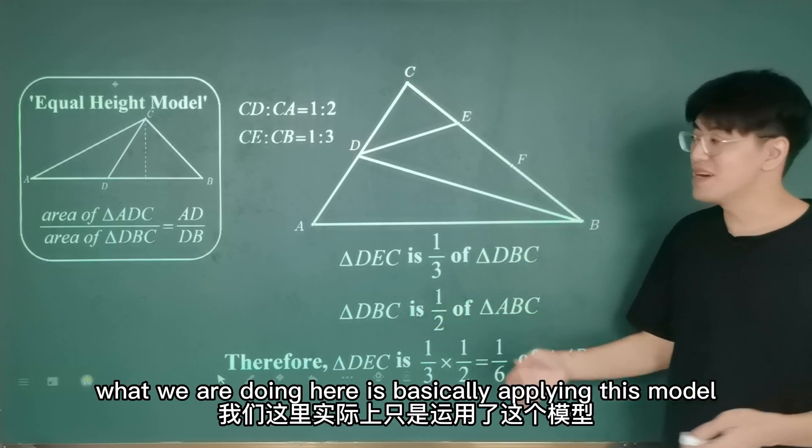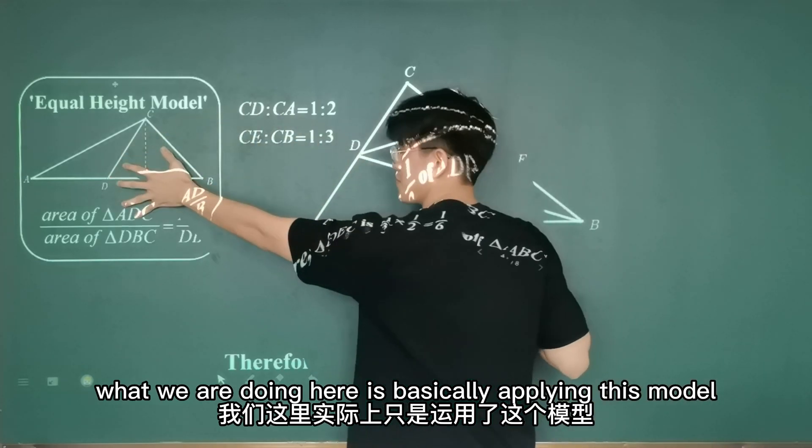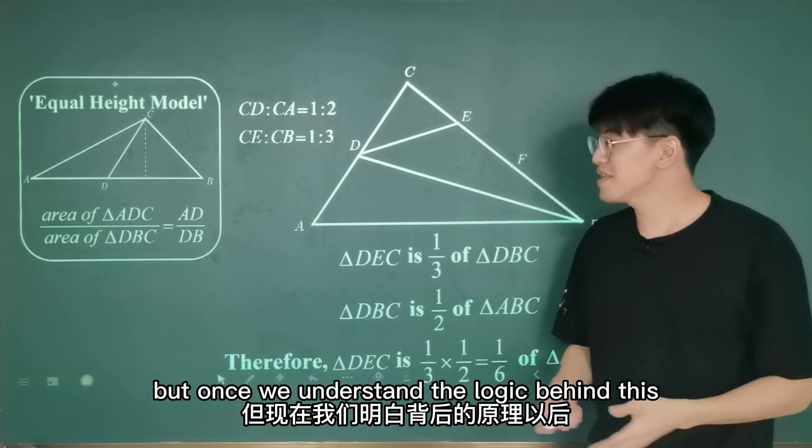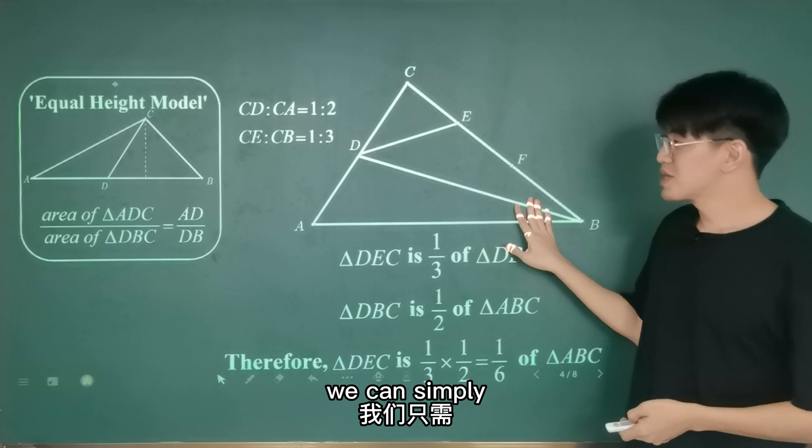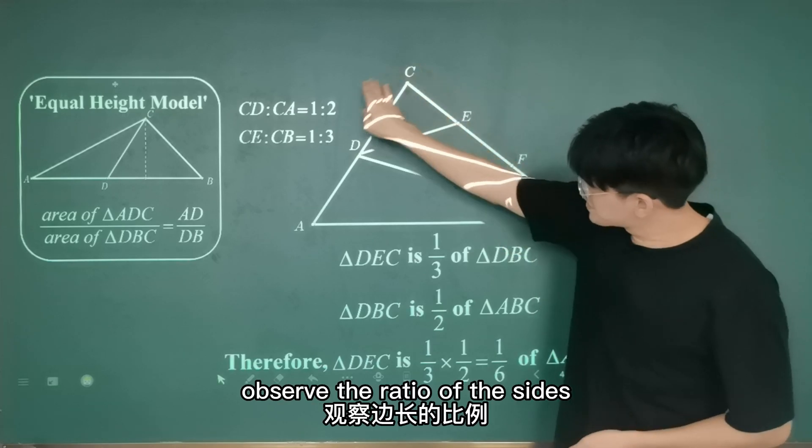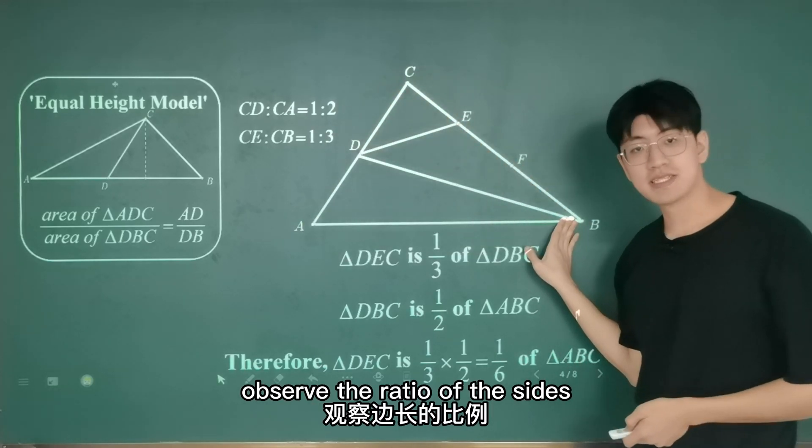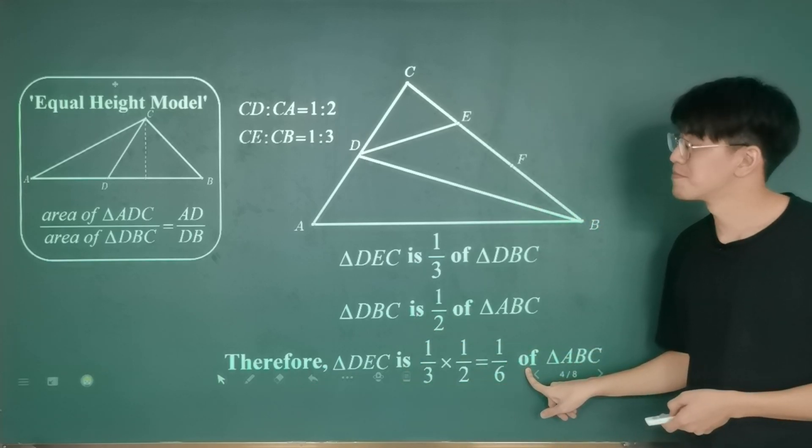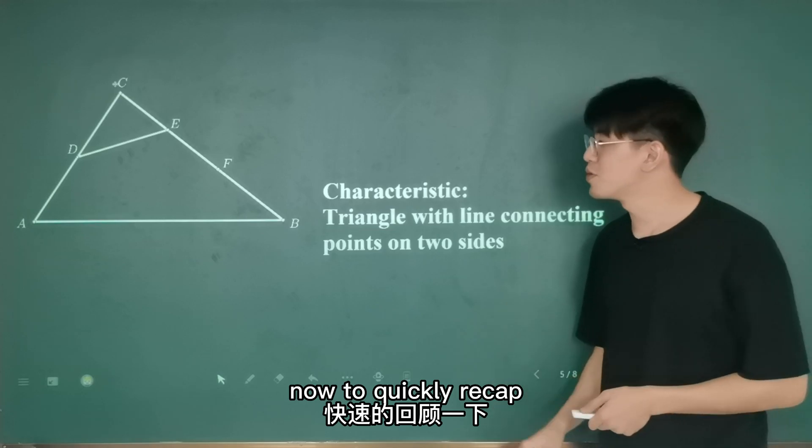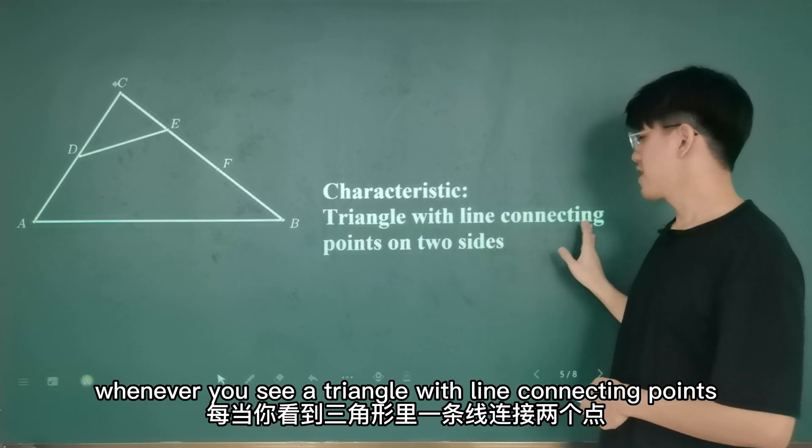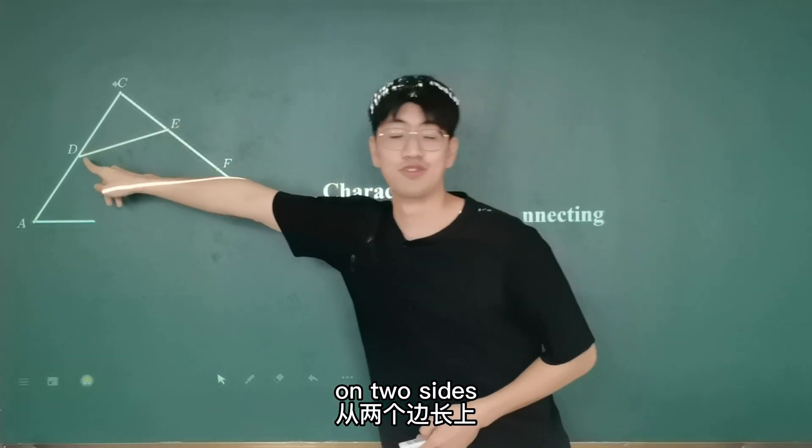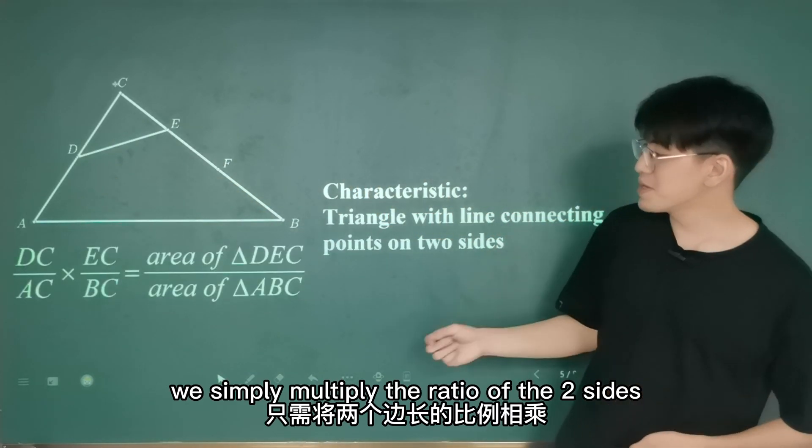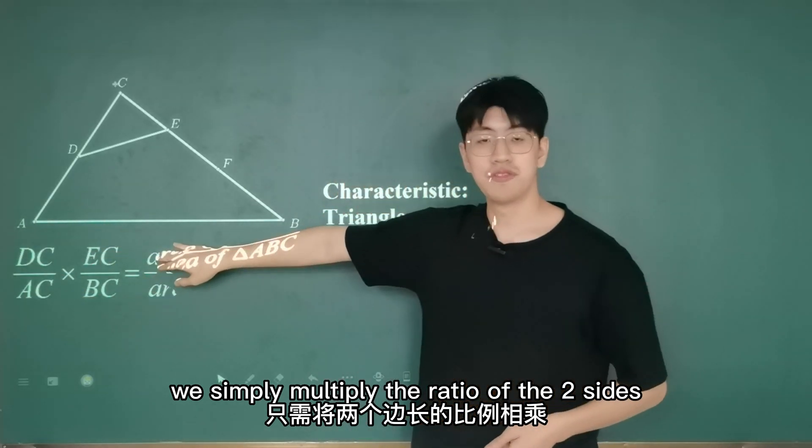What we are doing here is basically applying this model two times in a row in this shape. But once we understand the logic behind this, we can simply observe the ratio of the sides, multiply them together, and get the ratio to the area. Now, to quickly recap, whenever you see a triangle with lines connecting points on two sides, to find the ratio to the area,